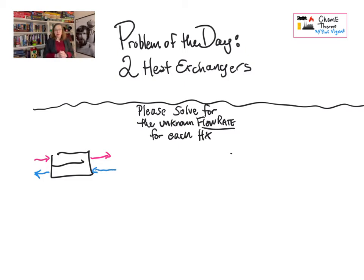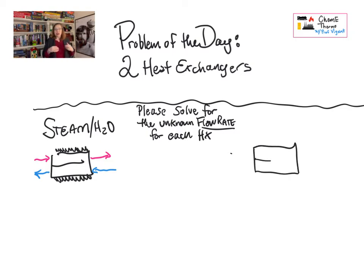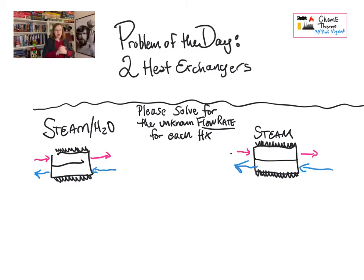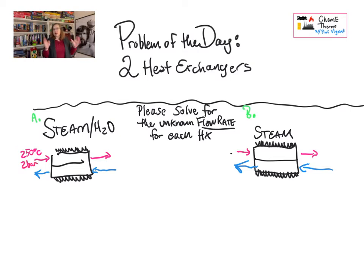I'm going to draw these out so you can see — counter-current is how I have them set up, although because we're looking at energy balances it doesn't change much. I also want you to use the steam tables for this. Our working fluid on both sides of this heat exchanger is water, and with the exception of one of the streams all of these are steam — water vapor, not liquid, with one exception you'll see in a minute. For heat exchanger A, the hot stream comes in at 250°C and 2 bar, and everything's going to be at 2 bar. We're approximating this as constant pressure — yes, there's a pressure drop but it's small. That hot stream is going to leave at 150°C.